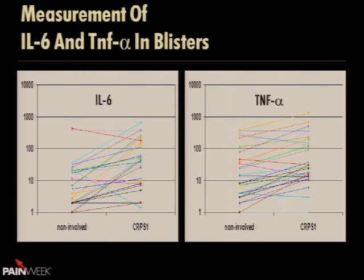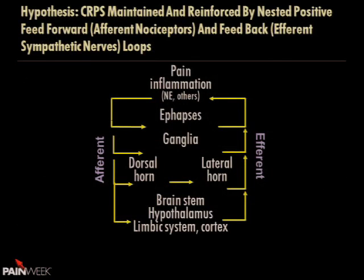We can measure different cytokines in the blisters and see big differences between non-involved and involved sides. These data are mostly out of Holland. The Dutch are all about inflammation as the cause of CRPS. In Chicago, we're all about central sensitization with our bent toward fMRI. The German schools are all about sympathetic activity. All three labs have compelling evidence that their mechanism is the answer, but it all happens to all the patients. We need systems that explain and include it all.